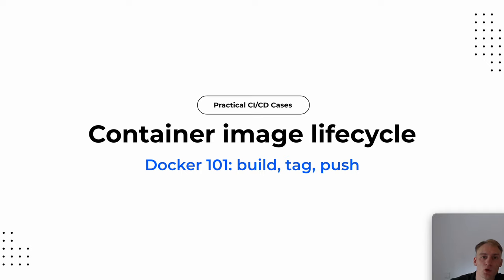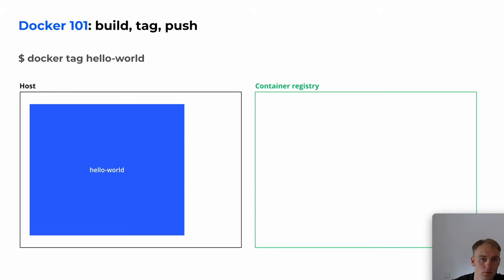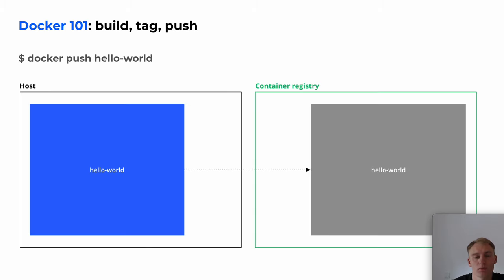Let's look at one more scenario with Docker — image publication. In Docker, we have three commands to do that: build, tag, and push. The image is published to the container registry.